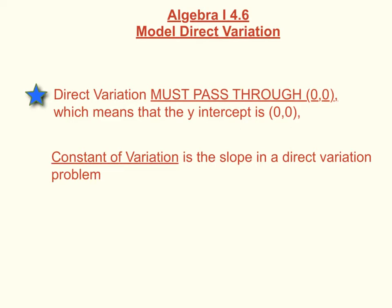That is huge. That is something that you have to know is that it passes through 0, 0, all direct variation. The second thing that is hugely important to know is that your constant of variation, all that is is the slope, the rise over the run.